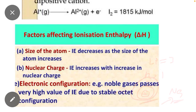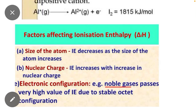Similarly, nuclear charge: if nuclear charge is greater, then ionization energy is always greater. And the last point is electronic configuration. Noble gases have a very high value of ionization energy due to stable octet configuration. All atoms having completely filled or half-filled orbitals have high ionization energy. Noble gas shells are always complete, that is why high energy is required to remove electrons. That is why electronic configuration also affects ionization energy.